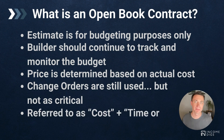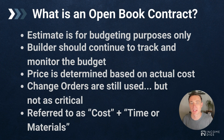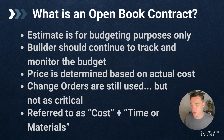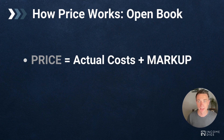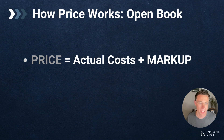Open book contracts are also referred to as cost plus or time and materials projects — they're all pretty much the same. I think 'open book' is a really nice way to describe it because it conveys how transparent these projects are, without getting the customer too focused on the markup. The price of an open book contract is your actual costs plus an agreed-upon markup. Buildertrend now allows us to do that, and I'm going to show you how to set it up within the system.